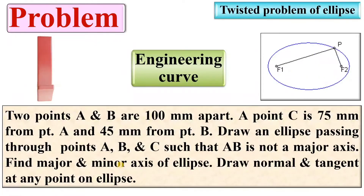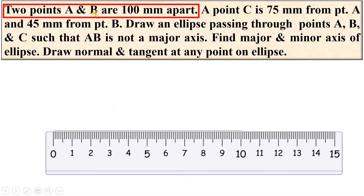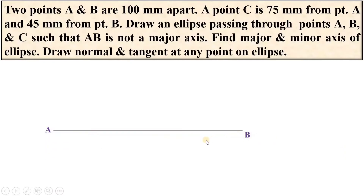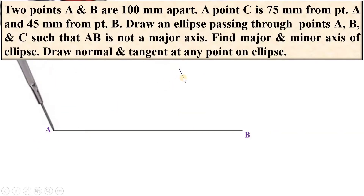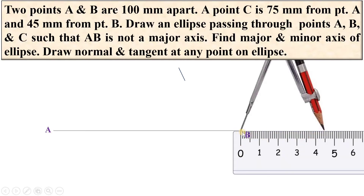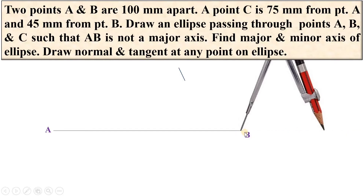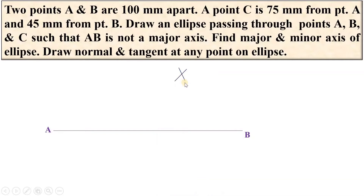Now let's see how we can solve the problem. First, locate points A and B which are 100 mm apart. Next, locate point C which is 75 mm from point A and 45 mm from point B. Take a compass, set the distance to 75 mm, and draw an arc with A as center. Then set the radius to 45 mm, take B as center, draw the arc, and mark the intersection point as C.